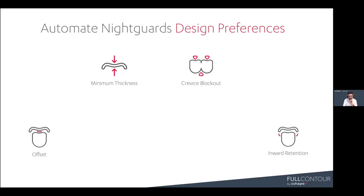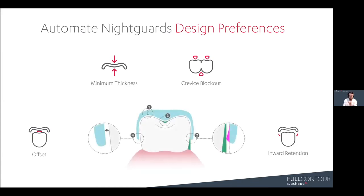The four parameters are: offset, minimum thickness, crevice blockout, and inward retention. There's a diagram available in our instructions for use page on Automate. You can find it by clicking the circle-I in the upper right-hand corner of your Automate upload page, then going to instructions for use.